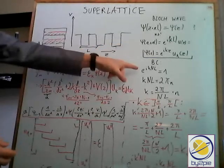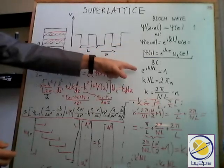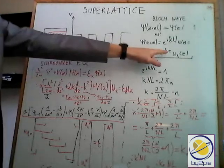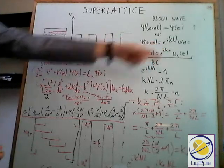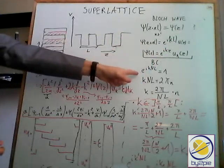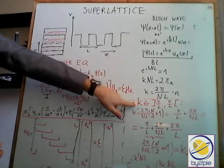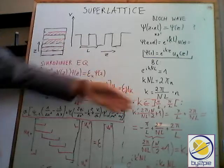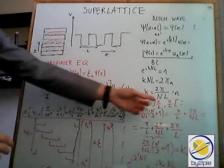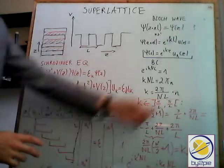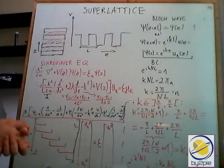And here what I'm doing, I'm proving you that whatever k vector - so k vector is the wave vector of this plane wave - whatever k vector you use, you can always limit yourself to k from the first Brillouin zone, from minus π/L to π/L.